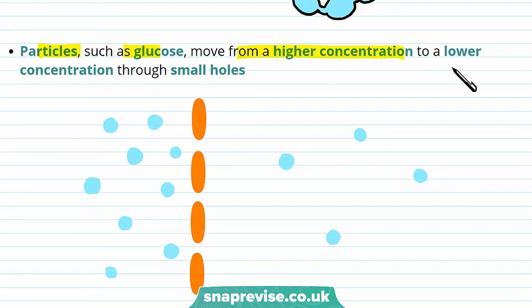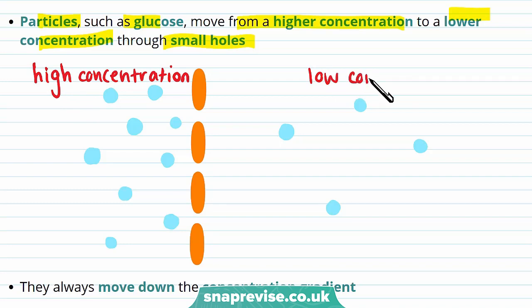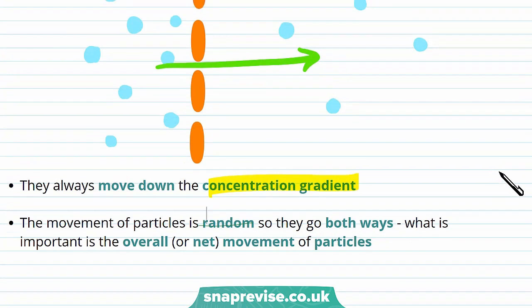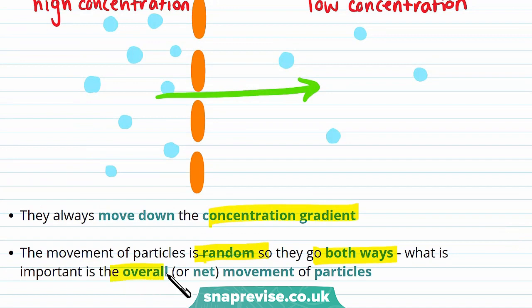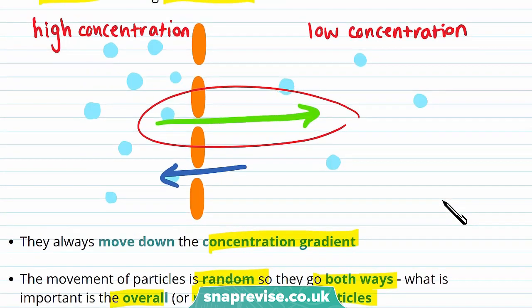Particles such as glucose move from a high concentration to a low concentration through diffusion — this is down the concentration gradient. It's also important to remember that the movement of particles is random, so particles go both ways. What we care about is the overall net movement. Some particles may move against the concentration gradient, but the net movement is from high concentration to low concentration, as shown by the longer arrow.